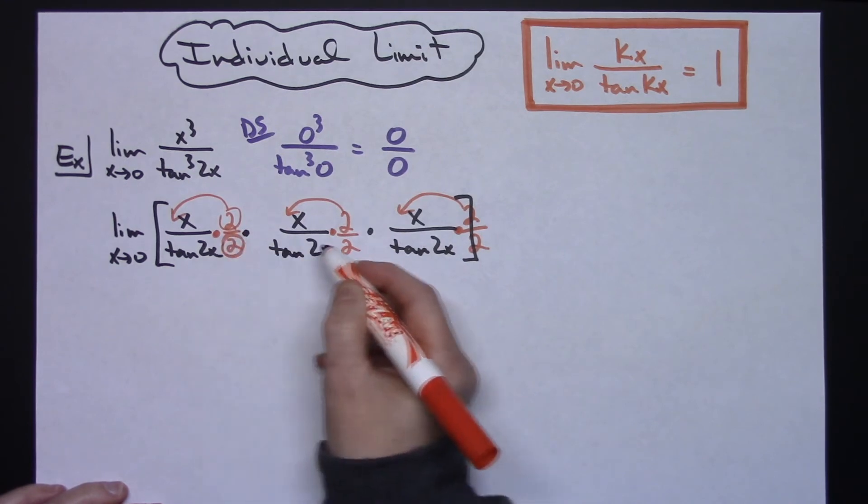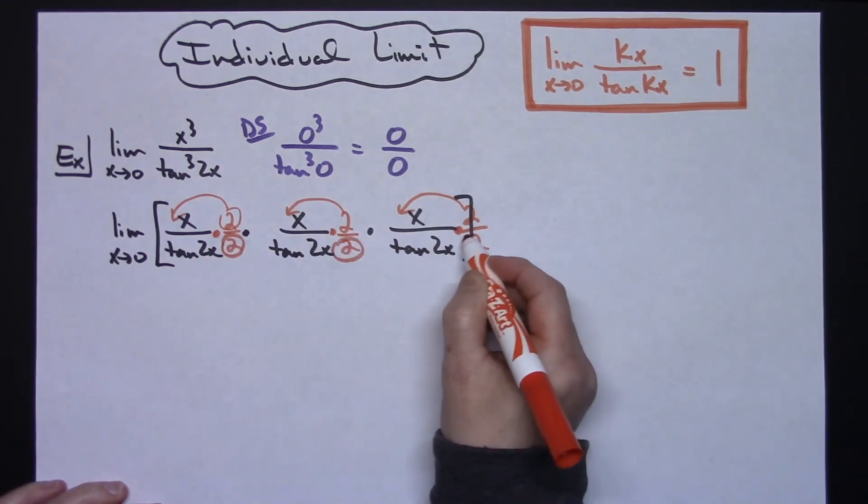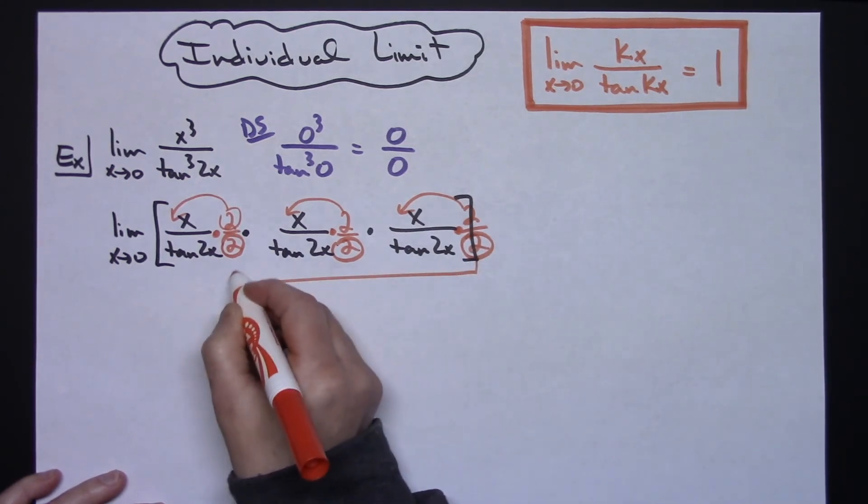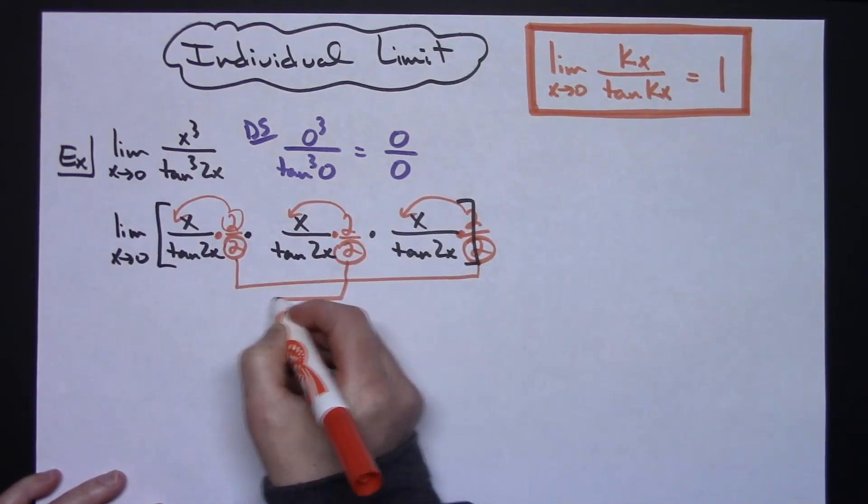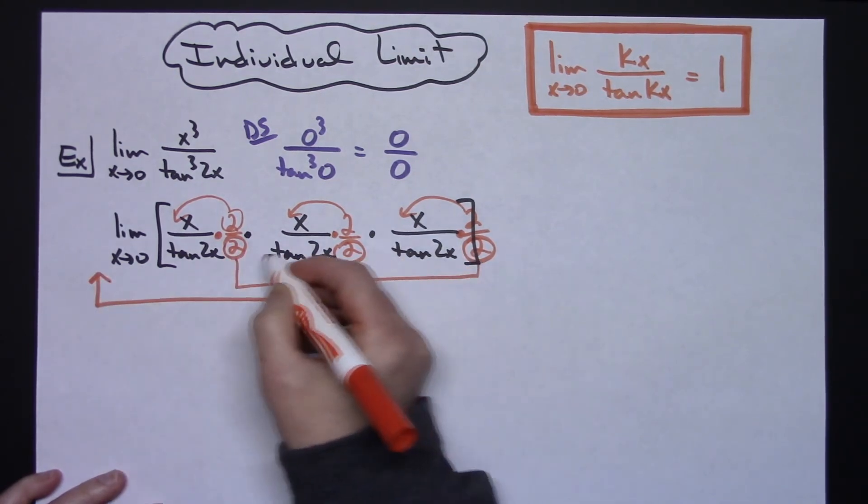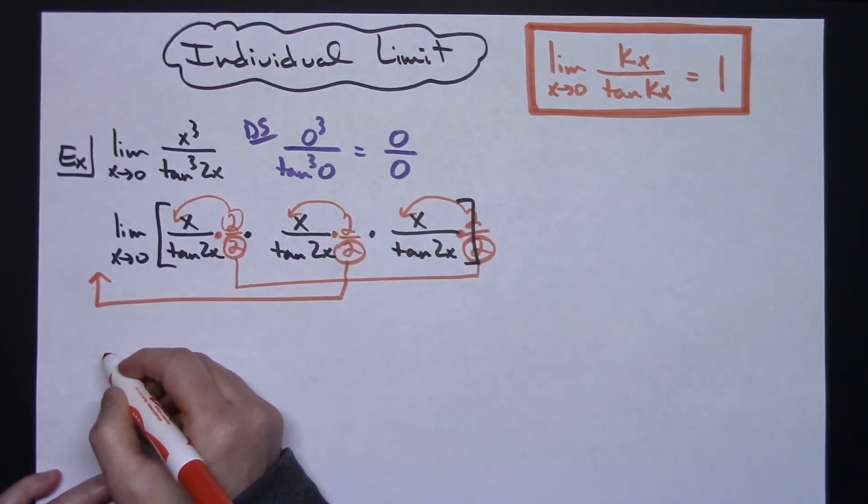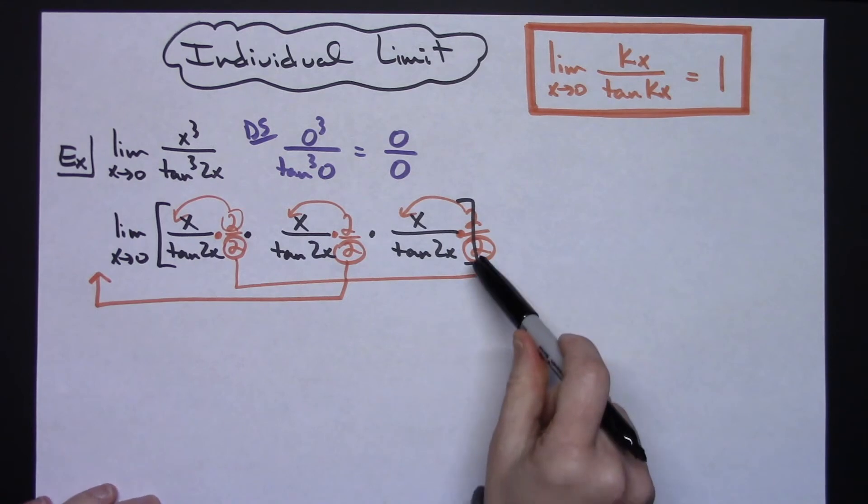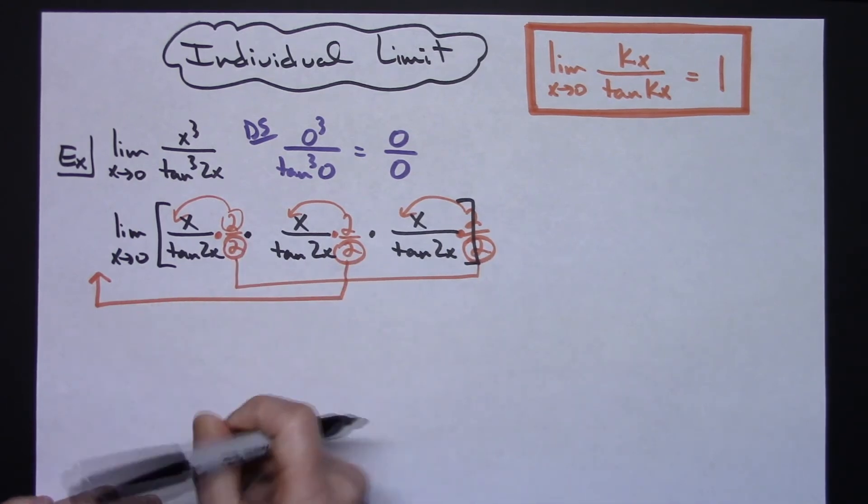Now these twos, 2 times 2 times 2, that's going to give me an 8. I'm going to take all three of these and pull them out in front. Now they are in the denominator, so when I pull them out, I'm really pulling out a 1/8. You got to make sure that you're not just pulling it out as a whole number. Those twos were in the bottom, so I'm pulling it out in the bottom.